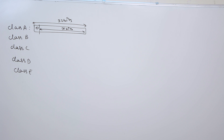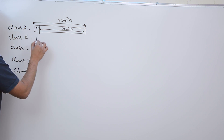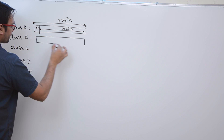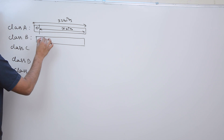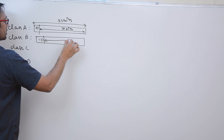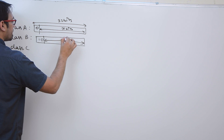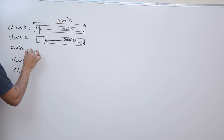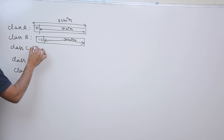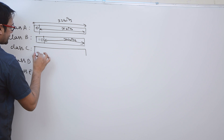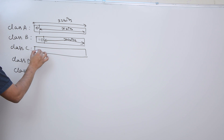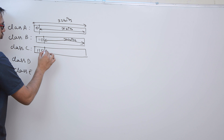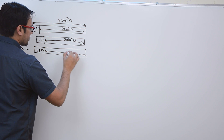In case of class B, the first 2 bits are fixed as 1, 0, and the rest 30 bits can take any combination. In case of class C, the first 3 bits are fixed as 1, 1, 0, and the rest 29 bits can take any combination.